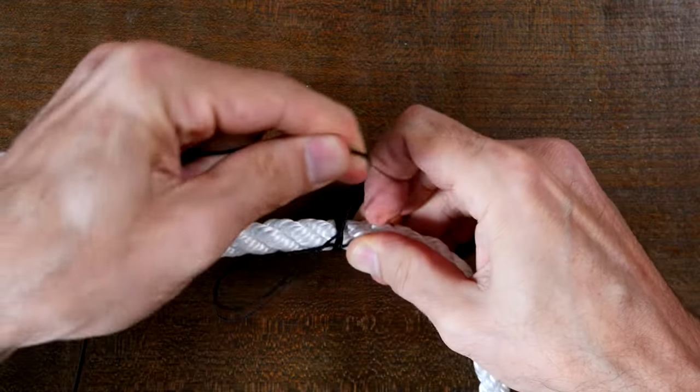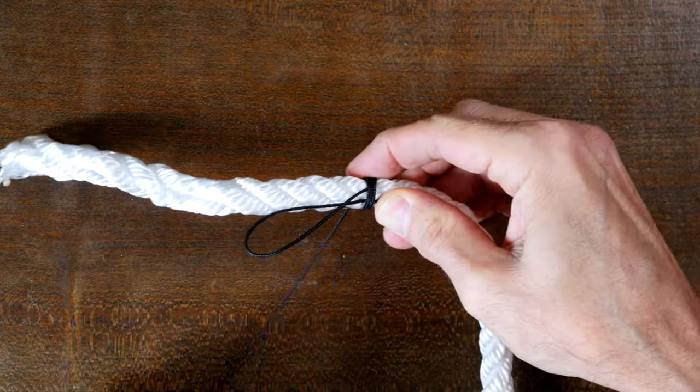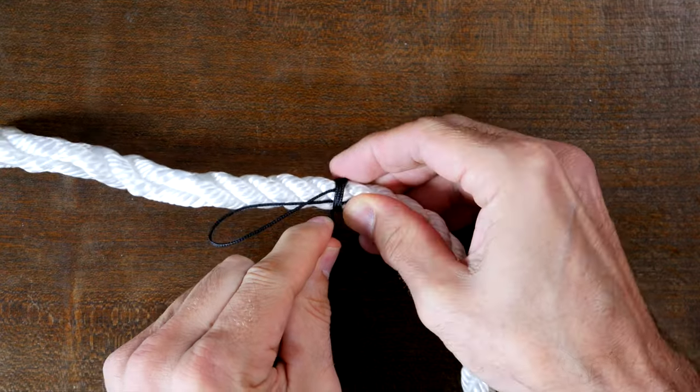With all whipping, it's important that you make your wraps at least as wide as the width of your main rope. One and a half times the width or more is even better.